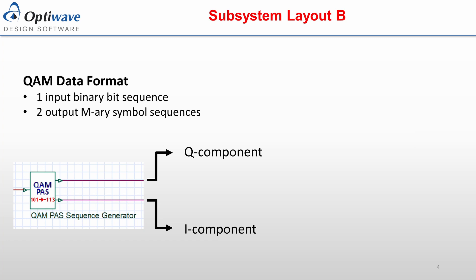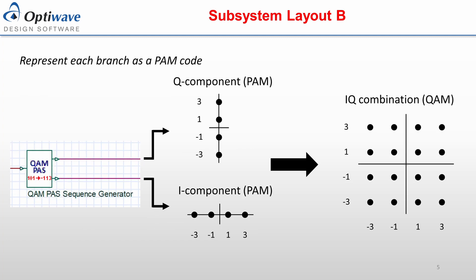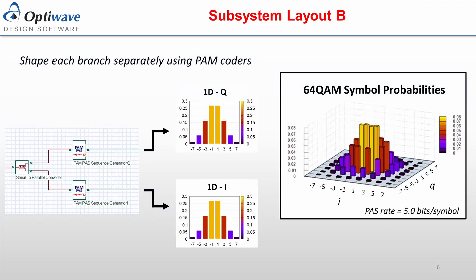Subsystem layout B uses a different approach than subsystem layout A. In the QAM data format, there is one input binary bit sequence and two output symbol sequences. For square QAM formats, these two output sequences can be represented as PAM sequences. Using a 16 QAM example, the two sequences can be represented in the PAM-4 format with different phases. When combined as a symbol pair, these two sequences represent the full QAM constellation.